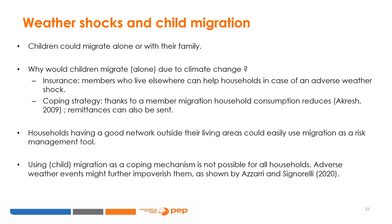Child migration could also be used as a coping strategy. Parents could ask the child to migrate as a response to a weather shock — if the shock tightens the family's budget constraints, children can be sent to another household to lower their original household's consumption, and if they work, they can send remittances. Evidence from Akresh, 2009, shows that households in Burkina Faso who suffer an unexpected agricultural shock are more likely to send a 5- to 15-year-old daughter to another household.